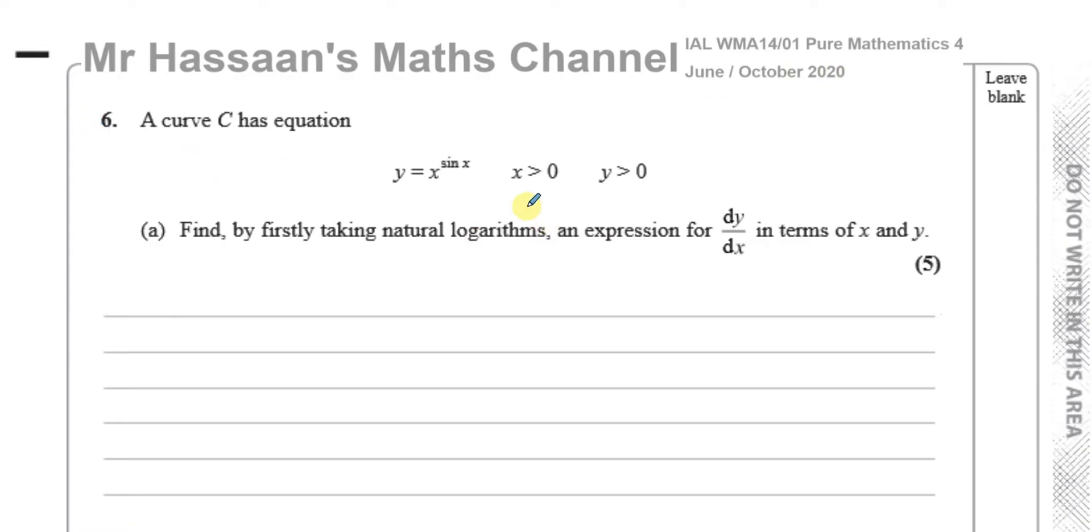This is a question where we have been told that a curve C has equation y equals x to the power of sine x, where x and y are both greater than 0. Find, by firstly taking natural logarithms, an expression for dy/dx in terms of x and y. So they've kind of given us an idea of how to start this question, and that's because you've got x and you've got a power of sine x there. So they told us to take natural logarithms first and then find dy/dx, so it's going to involve some sort of implicit differentiation.